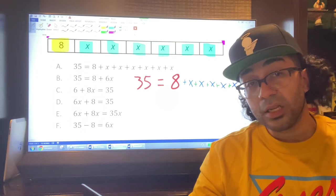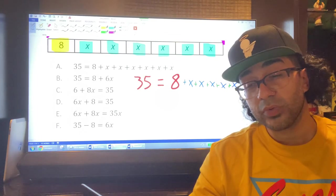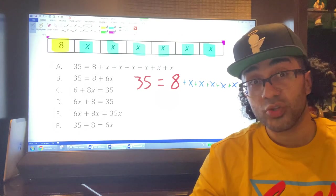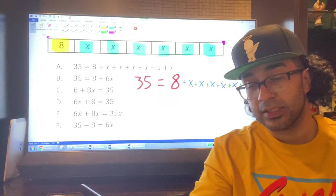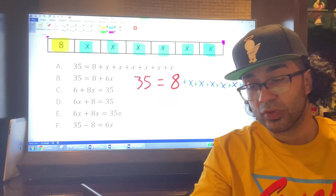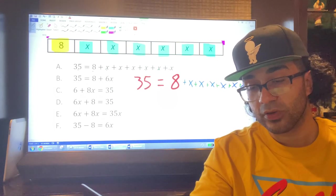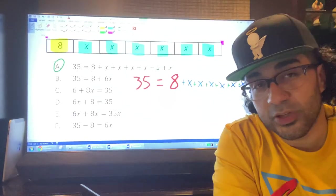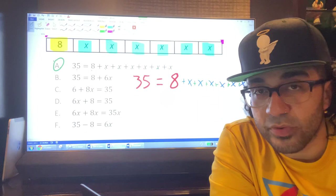Let's write it basic addition. We could say that 35 equals 8 plus 1, 2, 3, 4, 5, 6 X's. I'll put my addition sign in between them. Does that look like any equation that we have up there that they're asking us to match with? Did you say A? You're right.